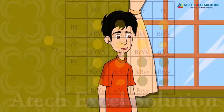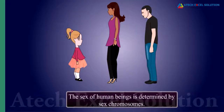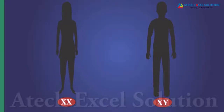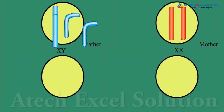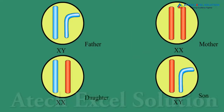Why do we find that in one family we have only boys and no girls? The sex of human beings is determined by sex chromosomes. Each human being has 23 pairs of chromosomes; 22 pairs are similar, and one pair — the sex chromosome — is different. XY is the male sex chromosome, while XX is the female sex chromosome. X chromosome is inherited from the mother. If X chromosome is also inherited from the father, the child becomes XX and a girl is born. If Y chromosome is inherited from the father, the resultant chromosome of the child is XY and a boy is born.